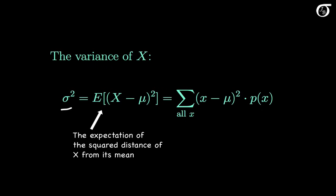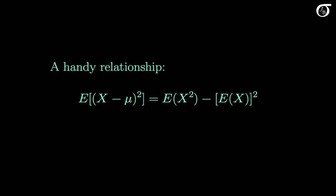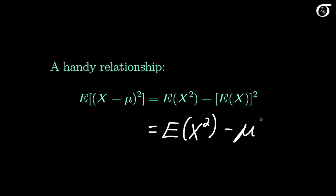Conceptually that's what the variance is. But it turns out there is a very useful relationship that can often help make the calculations a little bit easier in practice. Mathematically, it can be shown that the expectation of (x minus mu) squared is equal to the expectation of x squared, minus the square of the expectation of x. Since the expected value of x and mu are the same thing, we could also write this as the expectation of x squared minus mu squared. This relationship is very handy in calculations and also useful in mathematical proofs and derivations. It's not obvious why this holds just by looking at it, but it's not too tough to show mathematically.